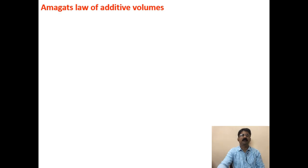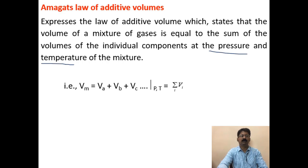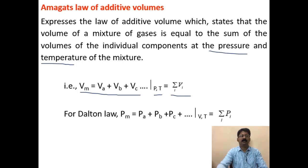Amagat's law of additive volumes states that the volume of a mixture of gases is equal to the sum of the volumes of the individual components at the pressure and temperature of the mixture. The partial volume is the volume occupied by the same mass of the substance at the mixture pressure and temperature. So Vm equals Va plus Vb plus Vc, or summation of Vi. And from Dalton's law, Pm equals Pa plus Pb plus Pc, summation of Pi.